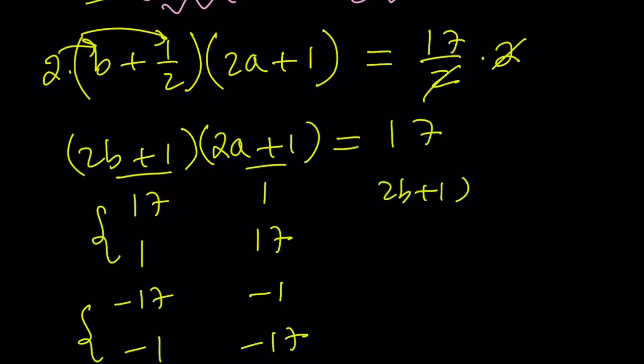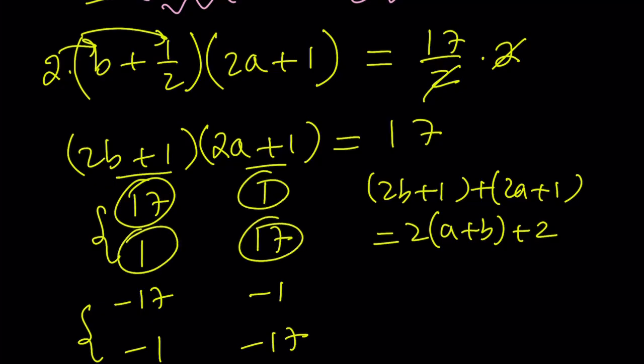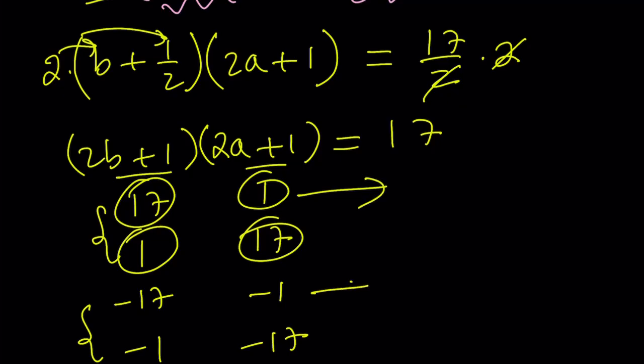You could also verify that by adding these two terms. 2b plus 1 plus 2a plus 1 gives you 2 times a plus b plus 2. And we know that it's always 17 plus 1 for these cases, and that's going to be 18. And if you subtract 2 and divide by 2, you'll get the answer. Make sense? So that wouldn't matter if you just use one of them. Having said that, let's go ahead and take a look at this one and this one, since it doesn't matter.